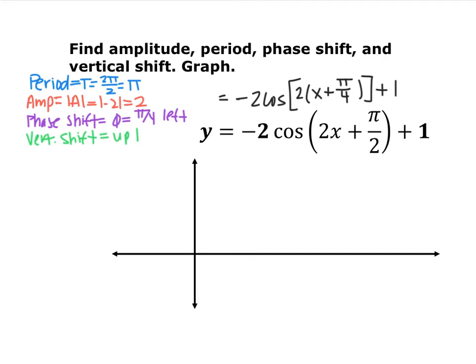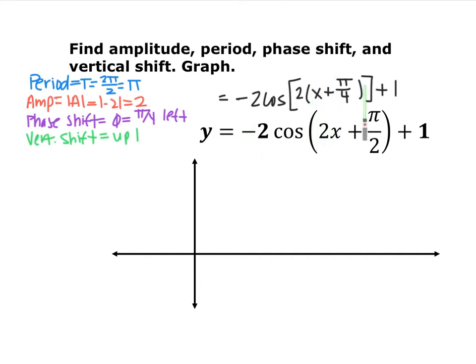Given this function, the period is 2π divided by 2 because omega — what's multiplied by x — is 2, so the period again is π. The amplitude is the absolute value of A; since amplitude is a distance, it's positive 2. Once we factor out the 2, we have x plus π over 4 inside, so the phase shift is π over 4 to the left. And we have a plus 1 on the end, so the graph shifts up 1.